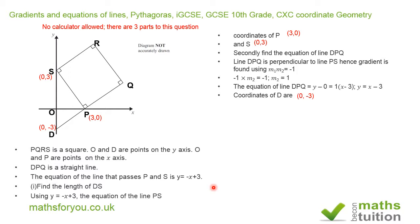Because we're measuring from D to O, that's 3 units, and from O to S is also 3 units. So the length of line DS is 3 + 3, which gives us 6 units. That's the answer to part 1 of the question.